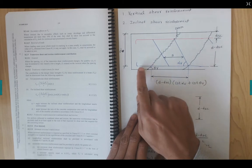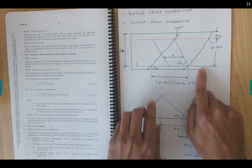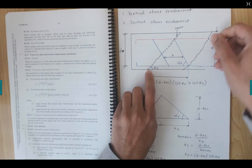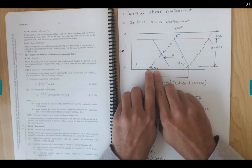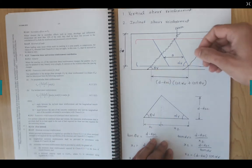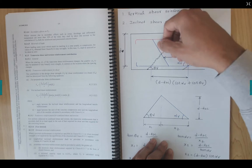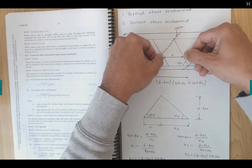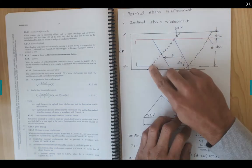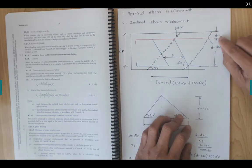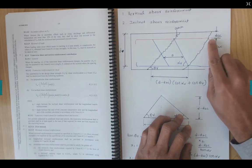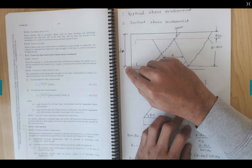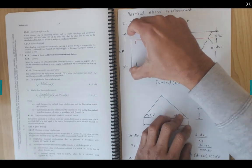If I draw the concrete beam with the tensile reinforcement at the bottom and compression reinforcement at the top — there is one shear crack and another shear crack here. The standard says the shear crack is inclined at angle θv, and the shear reinforcement is at angle αv. The horizontal spacing between reinforcements is s, and the distance from the top fiber to the compression reinforcement is dsc. The depth to the tensile reinforcement is d, and the overall depth is capital D.